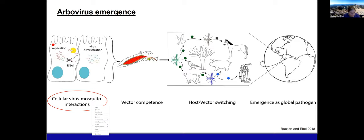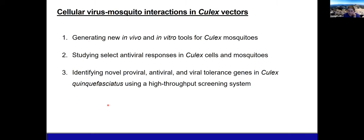We are interested in how cellular virus-mosquito interactions determine vector competence, because changes in vector competence can result in host or vector switching and can be associated with the emergence of a new virus as a global pathogen. We have three aims: first, generate new in vivo and in vitro tools to work with Culex mosquitoes and cells; second, study specific antiviral responses known from other mosquitoes; and third, use an unbiased approach to identify novel proviral, antiviral, or viral tolerance genes in Culex quinquefasciatus using a high-throughput screening system.